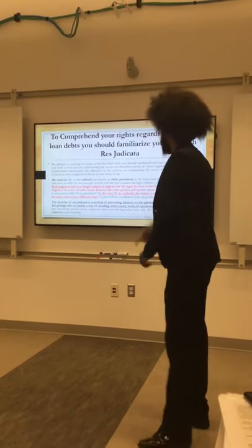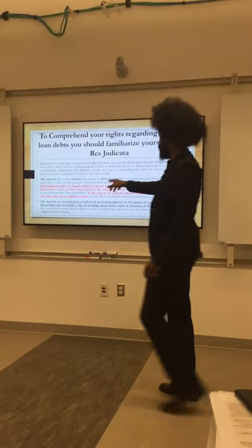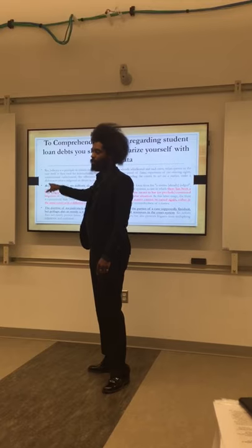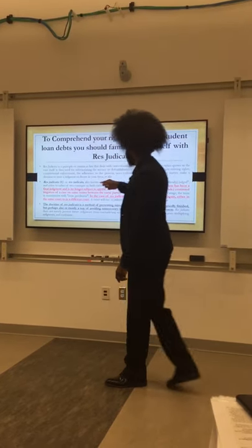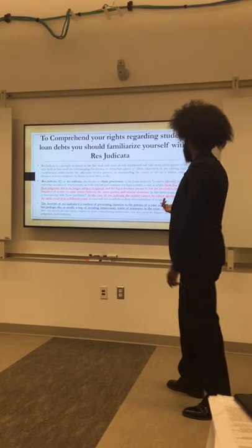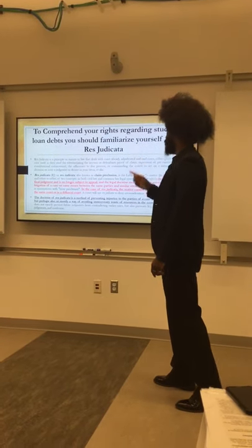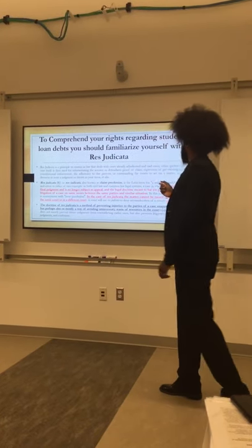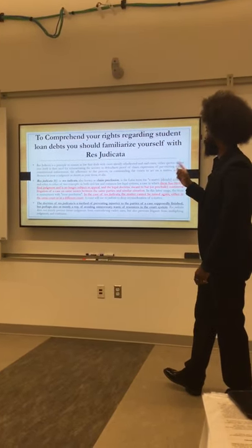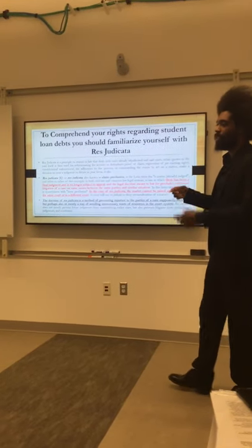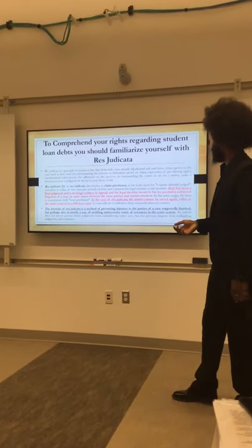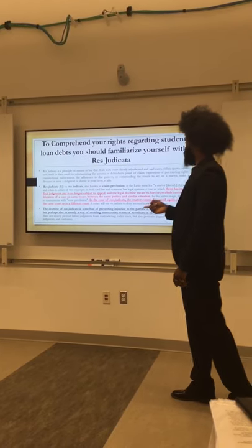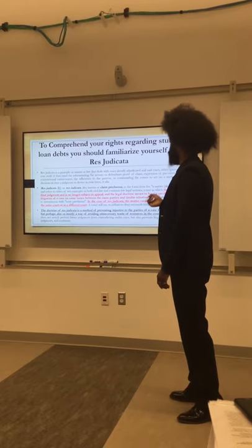Res judicata — also spelled res judicata with an 'I' — because when you're dealing with language, the letter J wasn't entered into the language until the 1500s, so before J it was I. Also known as claim preclusion, it is a Latin term for 'a matter already judged' and refers to either of two concepts. In both civil law and common law legal systems: a case in which there has been a final judgment and is no longer subject to appeal — meaning it's law — and a legal doctrine meant to bar or preclude continuing litigation of a case on the same issues between the same parties and or similar situations.